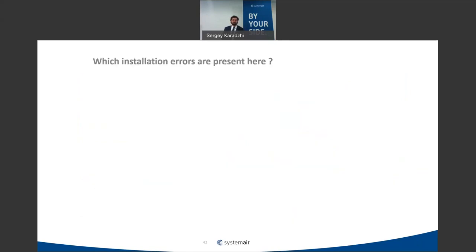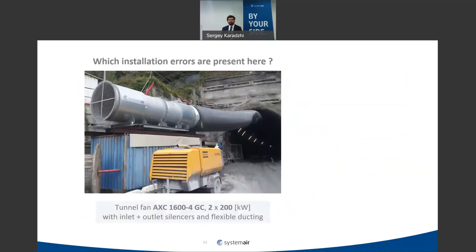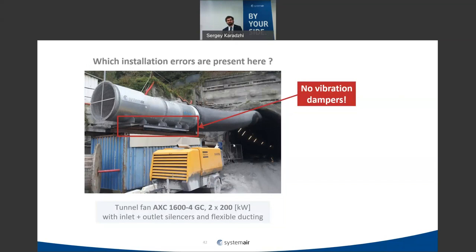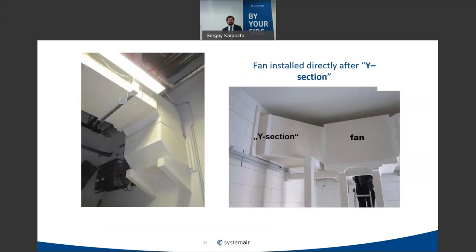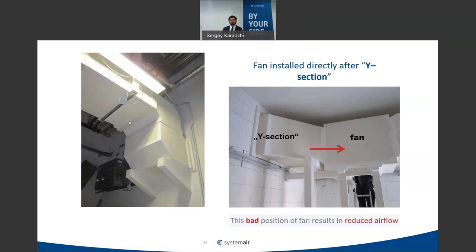Similarly, flexible connections going inside the duct due to too short a gap create additional avoidable losses and waste energy. A fan without any vibration dampers — as shown in another example — will distribute vibrations to the base structure, generating additional noise and eventually causing problems. Duct connections with sudden turns or abrupt geometry changes are also very bad and should be avoided.